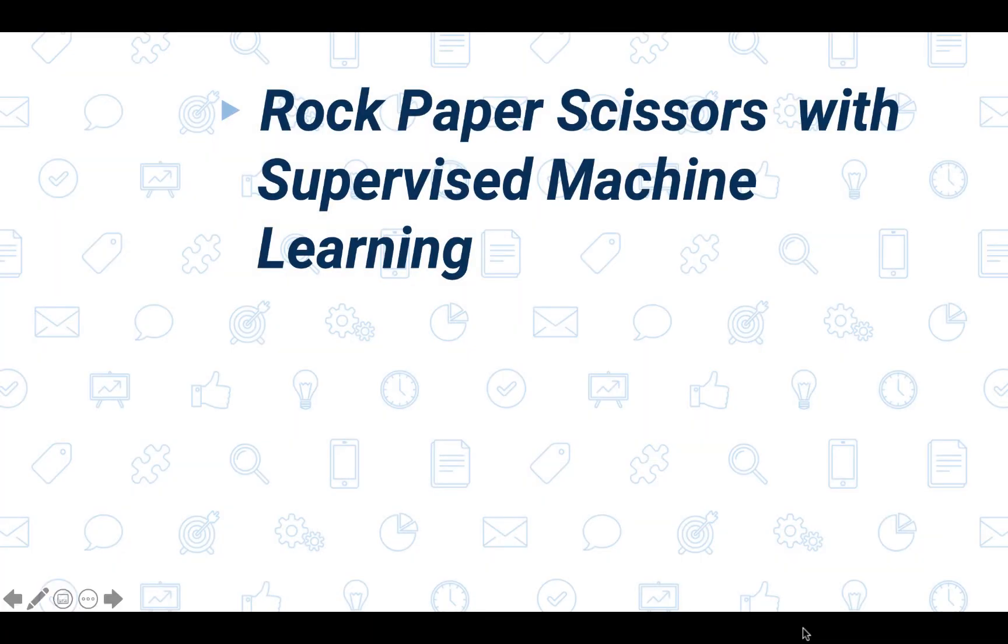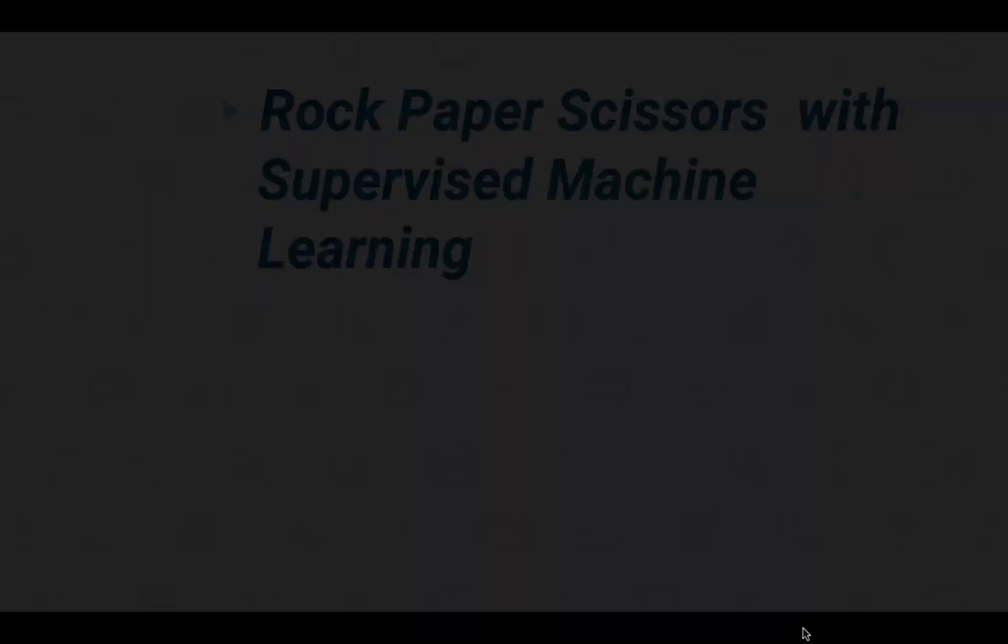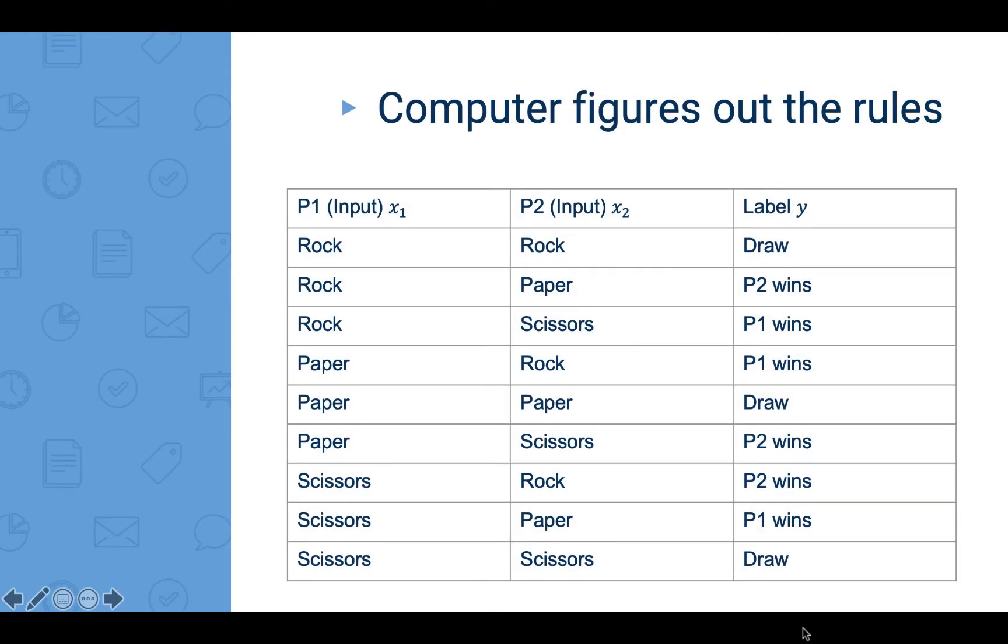Let's get back to the questions. How can we code rock paper scissors with machine learning? Instead of telling the computer the rule, we input the choices of the two players, as well as the results. The computer will figure out the rules between x1, x2, and y. Where x1 is the choice of player 1, x2 is the choice of player 2, and y is the result.